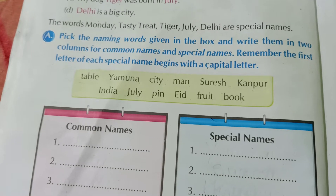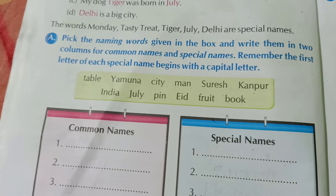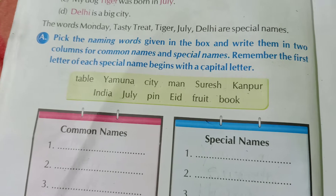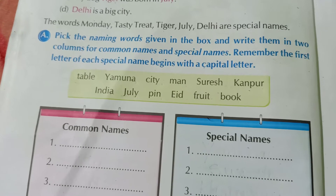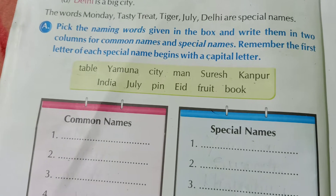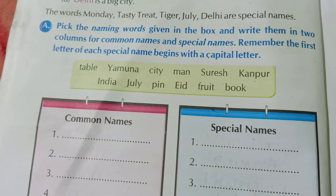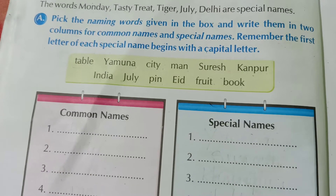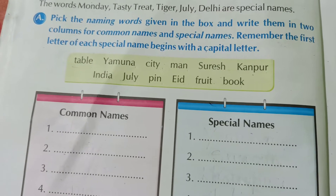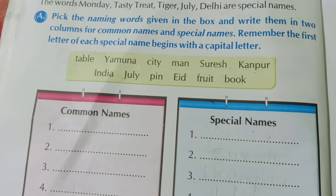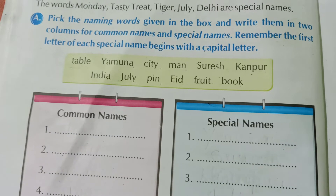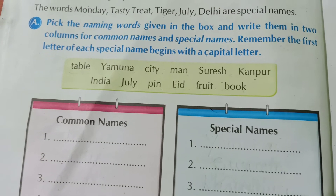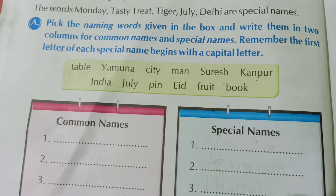Hi students, welcome back to our online classes. Today we are going to do English 1 of class 2, chapter 6, part 2, page number 18 and 19. In our last class, we learned about special names and today we are going to do exercises of special names. So, let's start.